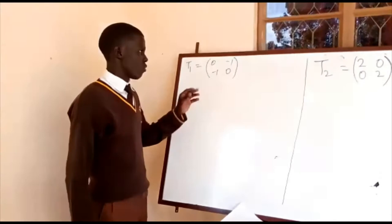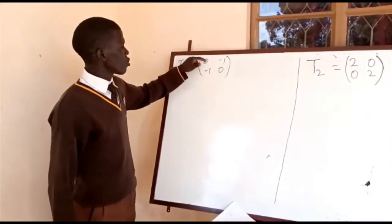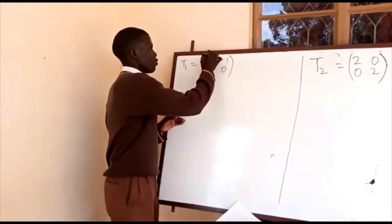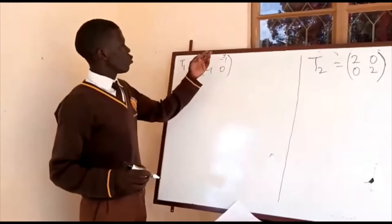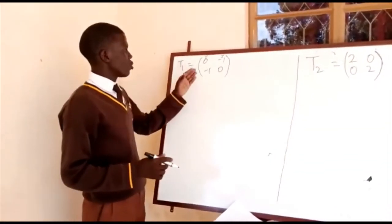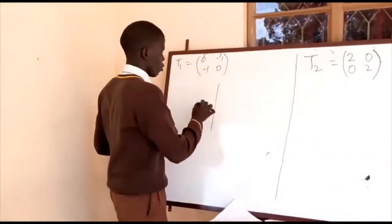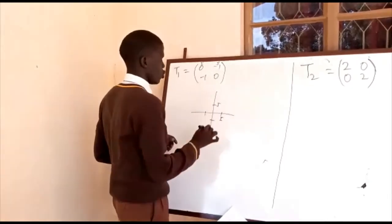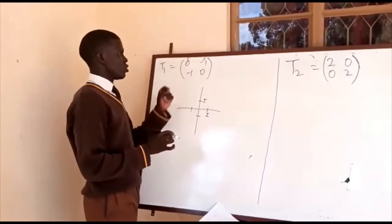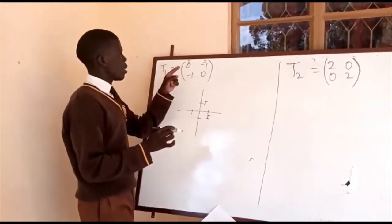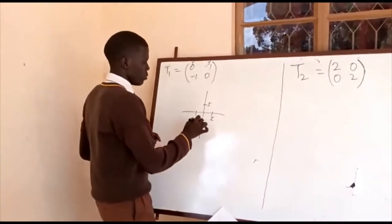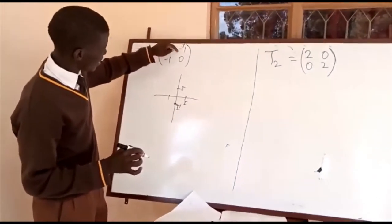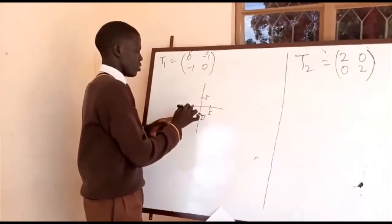In these matrix transformations, when writing the matrices we start with the image of I and J, which we generate using the unit square. The image of I is (0, -1), meaning X is 0 and Y is negative one. The image of J has X as negative one and Y as zero.